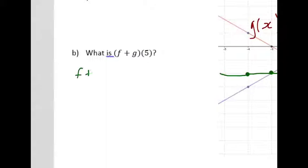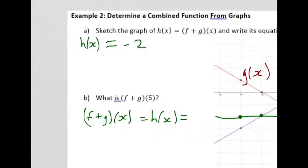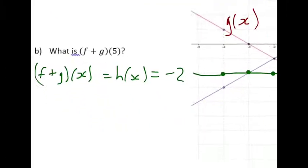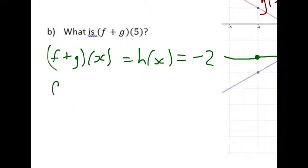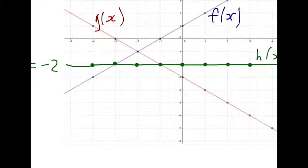Normally, this looks like f plus g of x, right? And we just found that to be h of x, right? Which we know is the equation negative two. If I asked you what f plus g of five was, that's the same thing as asking what is h when x is five, right? Well, y is always two, or the value of h is always negative two, sorry.